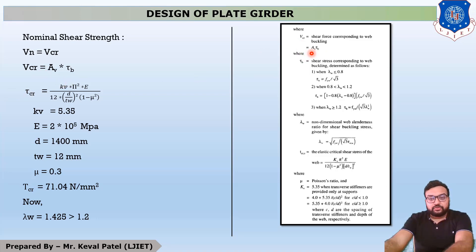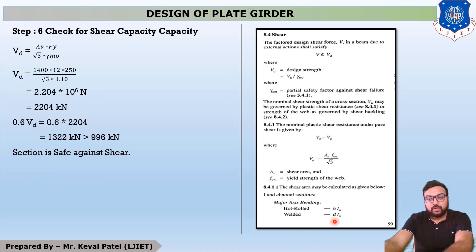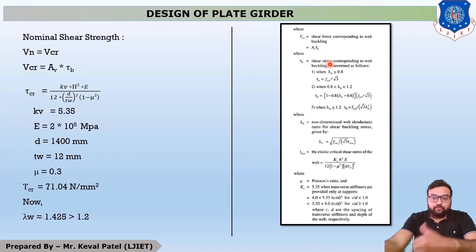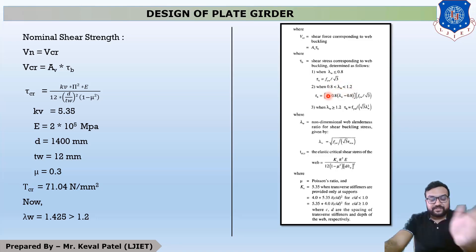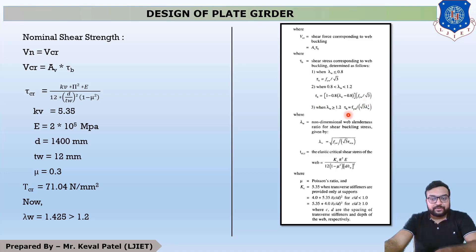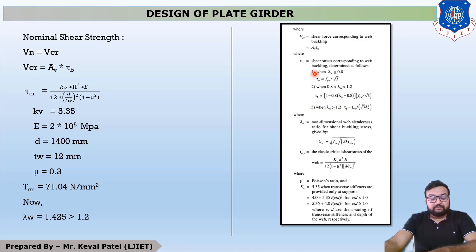Av is the shear area, with equation d × tw. The value of τv depends on the value of λw: if λw ≤ 0.8, use one equation; if λw is between 0.8 and 1.2, use another equation; if λw ≥ 1.2, use a third equation. So we must first find λw.